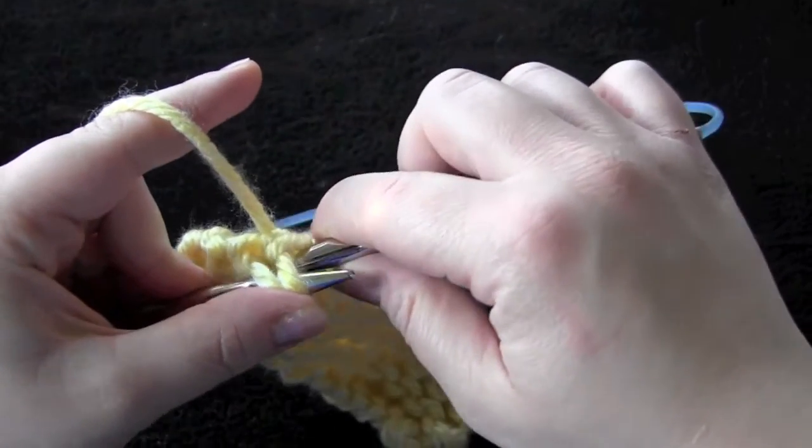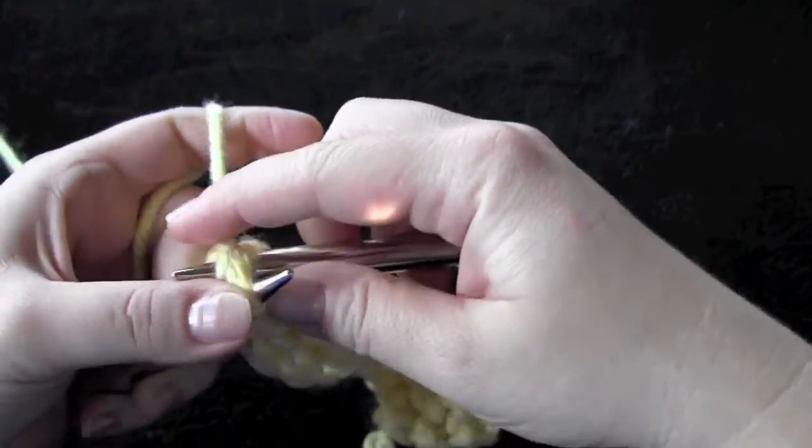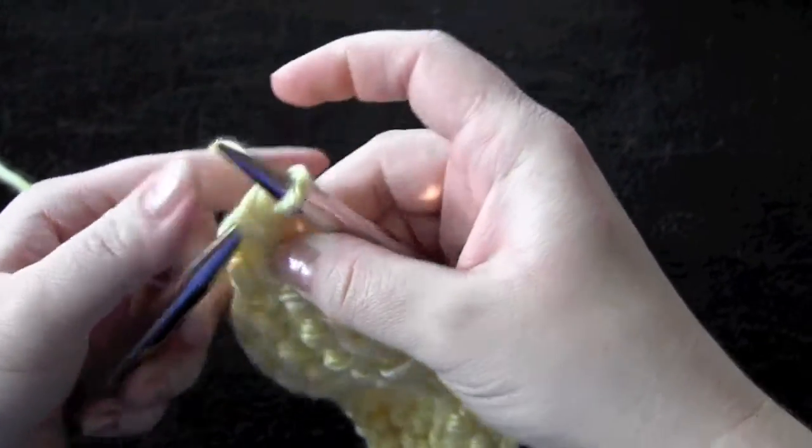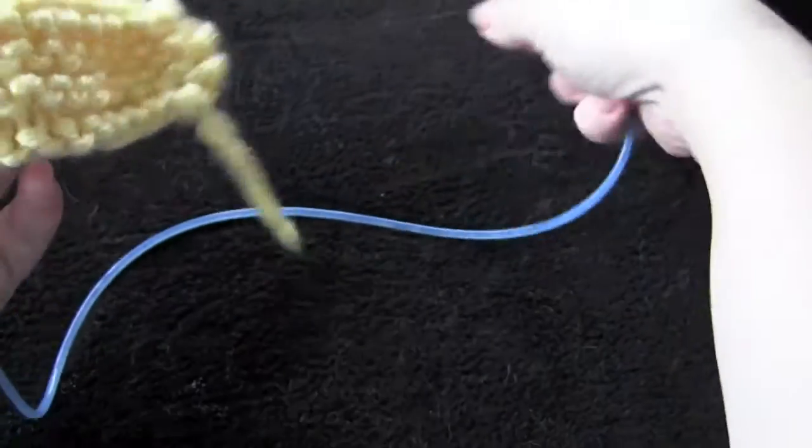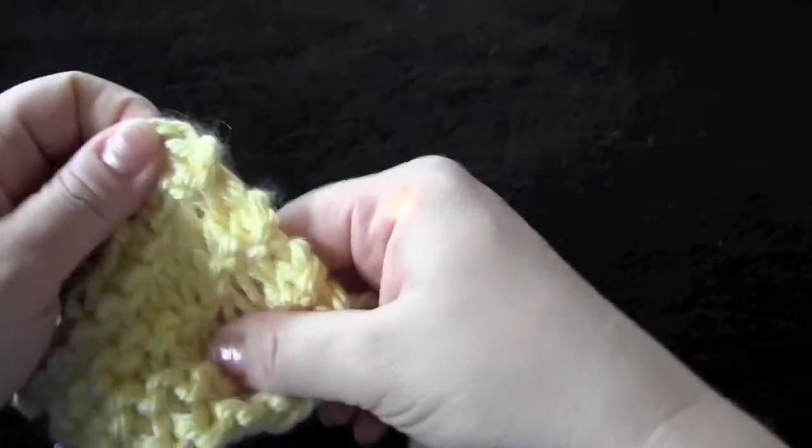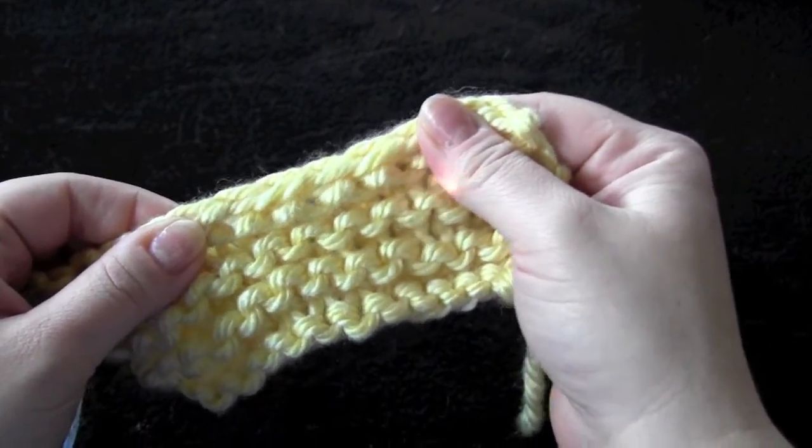The last two stitches knit together through the back loop. Then you would cut your tail and weave in your ends. Makes a pretty flexible bind off edge.